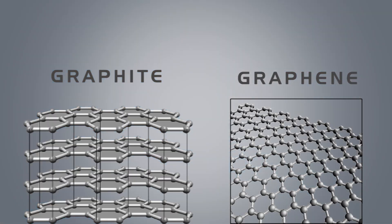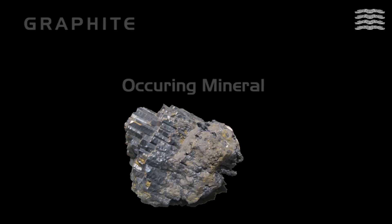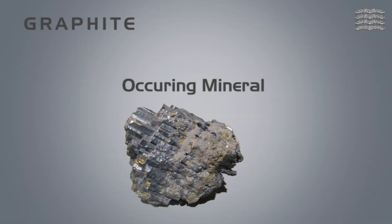Graphite and graphene are two such materials which have found widespread application in various industrial sectors. Although the former is derived from the latter, there are certain distinct differences in their features.